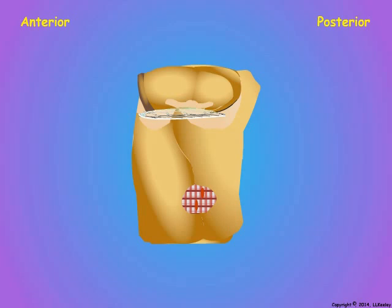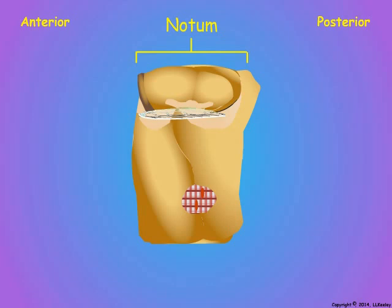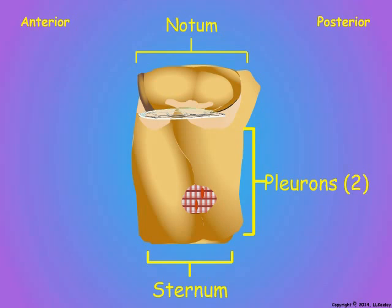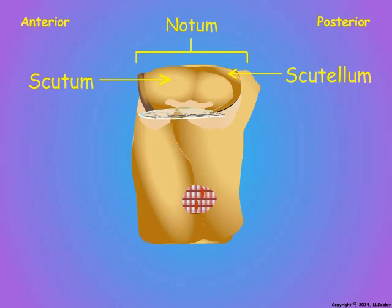The wings are extensions of the cuticle of the meso- and metathoracic segments. The armored body characteristic of most adult insects is comprised of rigid cuticular plates called sclerites. Thoracic segments consist of four major sclerites: a dorsal notum, two lateral pleurons, and a ventral sternum. The thoracic sclerites are subdivided by sulci or furrows that form internal strengthening ridges for muscle attachment. The notum is divided into a scutum and a scutellum.